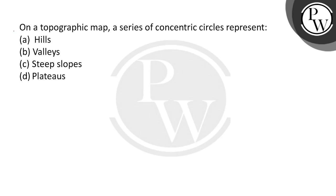Hello everyone, welcome to the topographic map. A series of concentric circles represent — hills, valleys, tips, slopes, plateaus? The answer is hills.